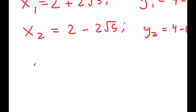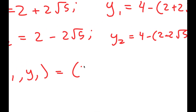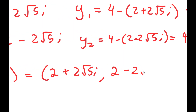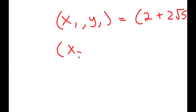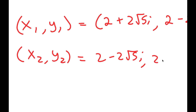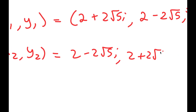So my two solutions are: (x, y) = (2 plus 2 root 5i, 2 minus 2 root 5i) and (x, y) = (2 minus 2 root 5i, 2 plus 2 root 5i).